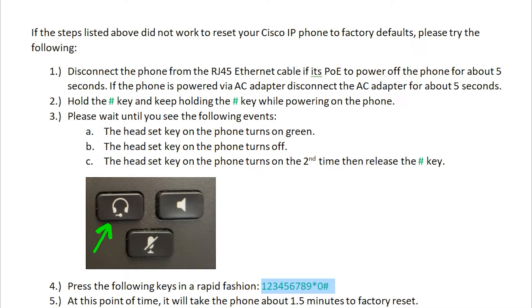For example, a PoE switch that does not have internet access, an isolated VLAN that is not routed out to the internet, or an inline mid-span injector — also known as a PoE injector — that is isolated and does not have internet access.